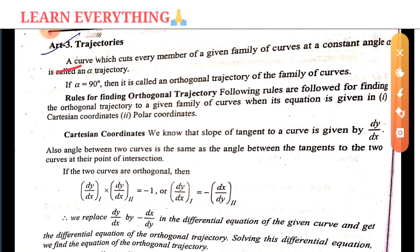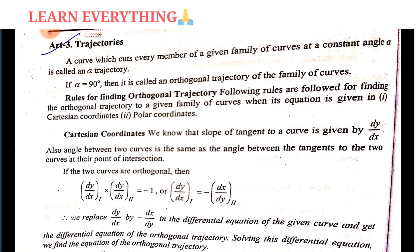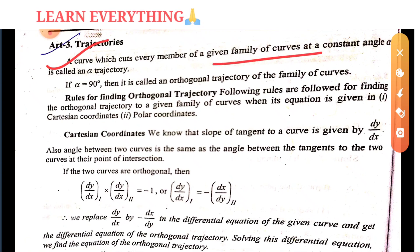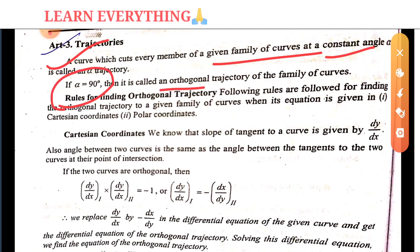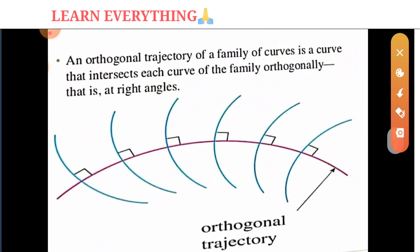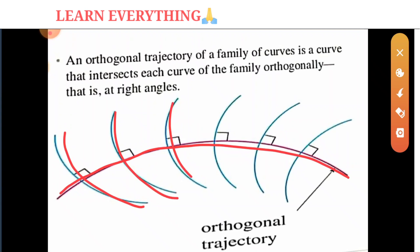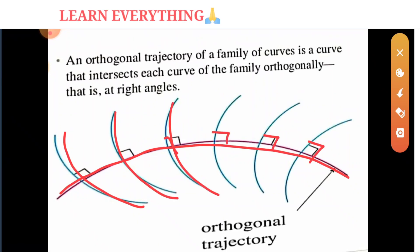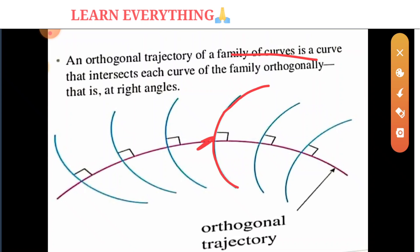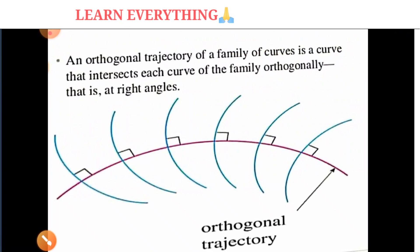A curve which cuts every member of the given family of curves at a constant angle alpha is called an alpha trajectory. When that constant angle is 90 degrees, it is known as an orthogonal trajectory. So the orthogonal trajectory is a curve that cuts every member of the given family of curves at a 90 degree angle.